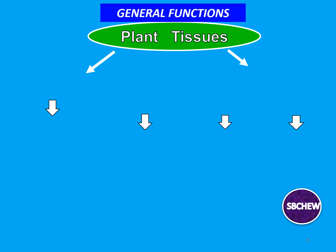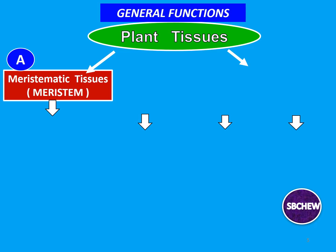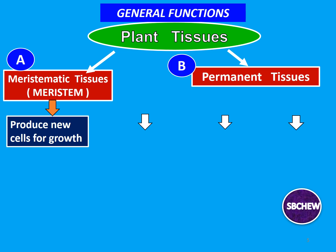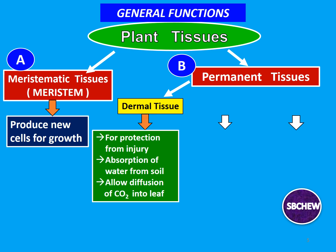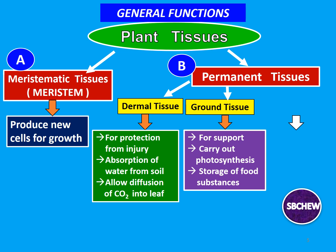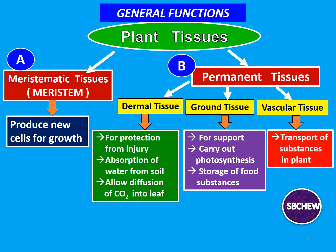The general functions of plant tissues. We have already discussed the functions of the meristematic tissues — they produce new cells through cell division for the growth of the plant. For permanent tissues: the dermal tissue is generally used for protection from injury, for absorption of water from the soil, and allowing the diffusion of carbon dioxide into the leaf via the stoma. For ground tissue, its basic function is to provide support to the plant, and also to carry out photosynthesis and store food substances in the cells. For vascular tissue, it aids in the transport of substances in the plant.